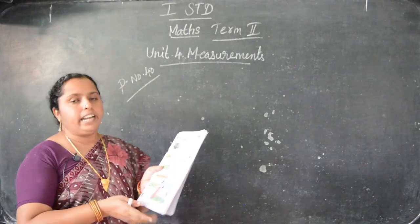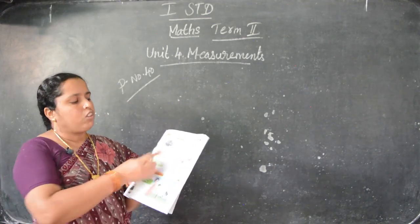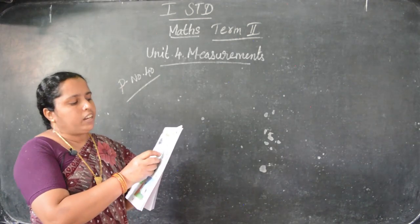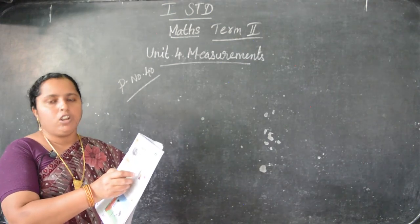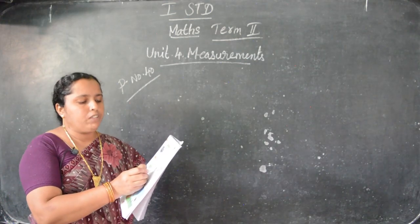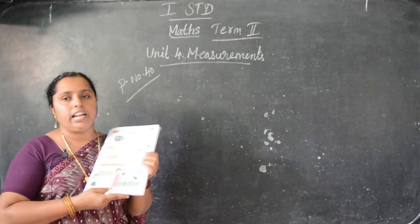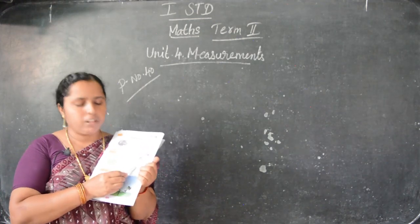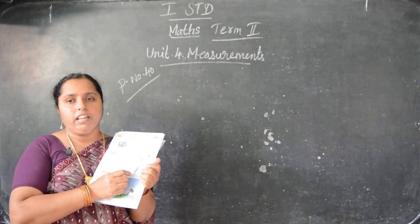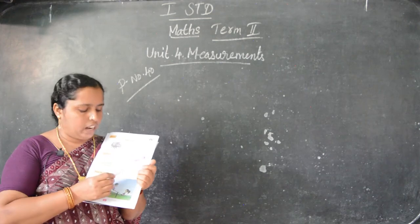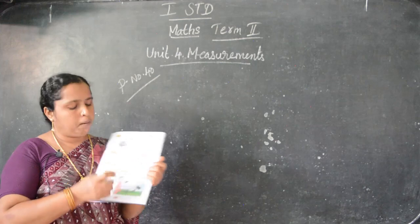Then heavy and light. Heavy means weight is more. Light means weight is less. So this one is hippopotamus, this one is rabbit. So this one is heavy - very heavy. This one is light. So color the heavier one with yellow color. Color the lighter one with pink color. Here see, this is beetroot, this is pumpkin. So which one is heavy? Pumpkin is heavy. So you have to color this one in yellow color. Then beetroot is light - you have to color this one in pink color.